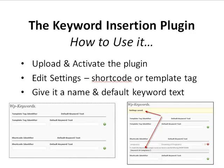How to use it: if you've ever used a plugin before, you'll have no problems using the keyword insertion plugin. You simply upload it and activate it through WordPress's built-in plugin section. Then you go and edit the settings. It allows you to dynamically insert the keyword using either a shortcode or a template tag. A shortcode — if you've ever used a WordPress plugin before, you've probably run into shortcodes. Basically it's a little bit of code that you copy and paste into your WordPress page or post wherever you want something to appear. It's the easiest method for beginner users.